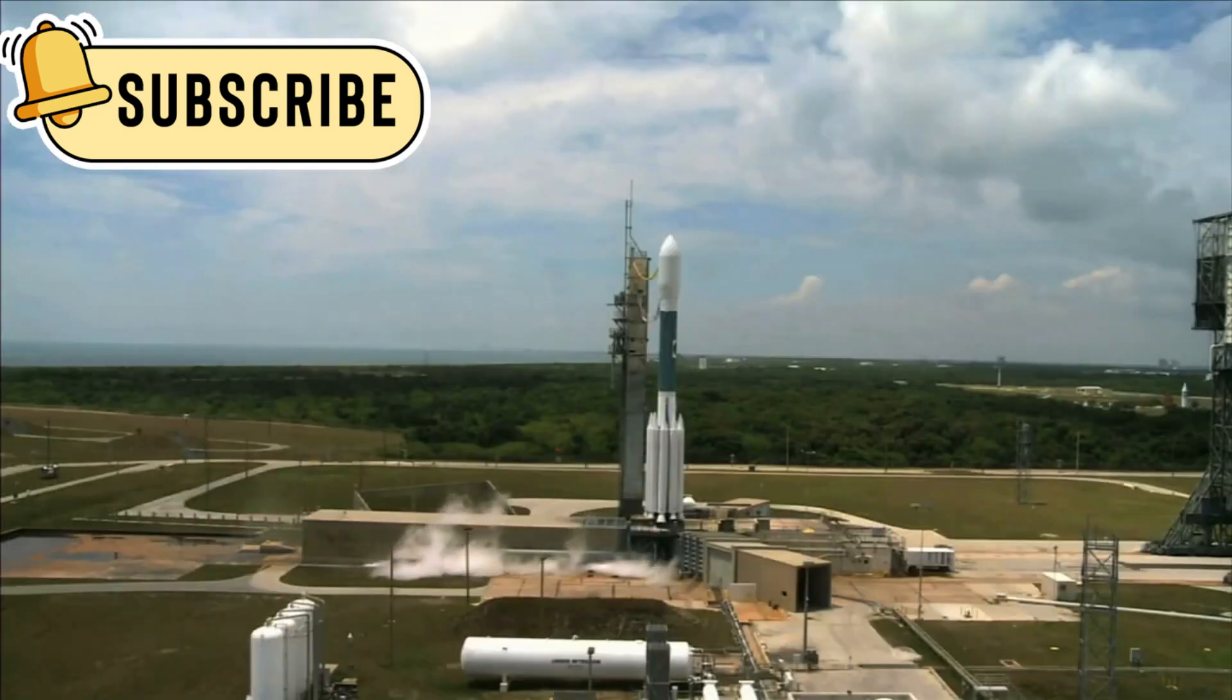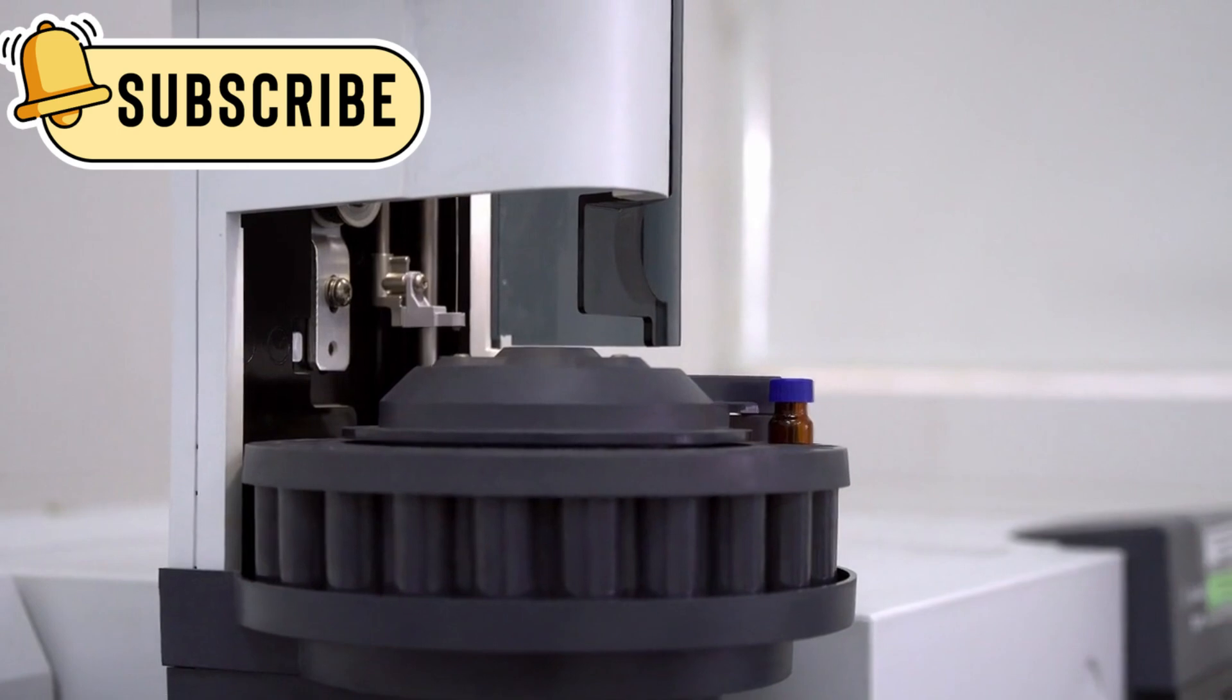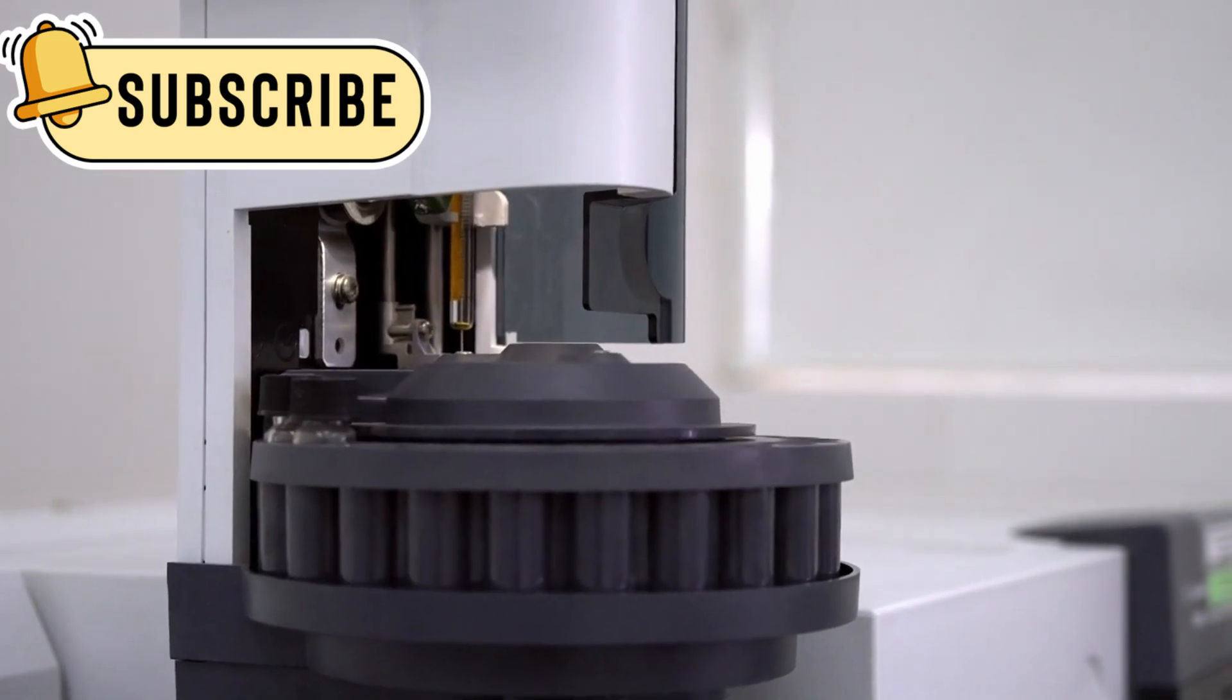Voyager 1 lifted off on September 5, 1977, carrying advanced scientific tools. These included cameras, spectrometers, and magnetometers to study planets, moons, and magnetic fields.